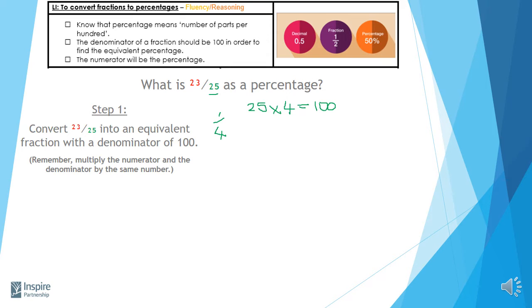Now, you need to remember that whatever we're going to do to the denominator, we also must do exactly the same to the numerator. In this case 23. It might be a little bit harder to use mental arithmetic to get 23 multiplied by 4, so you might want to just set that out in the column method.